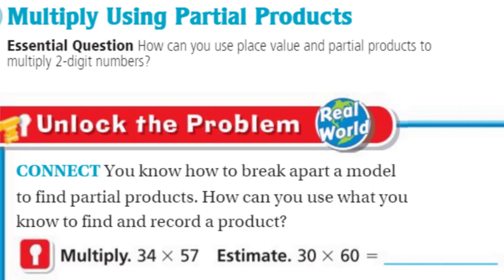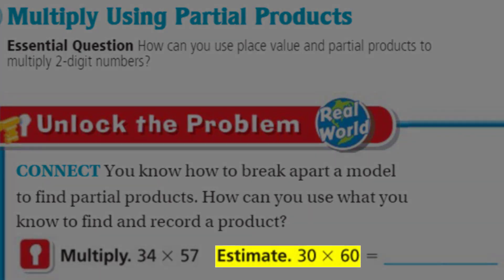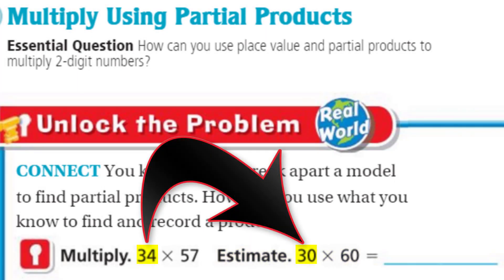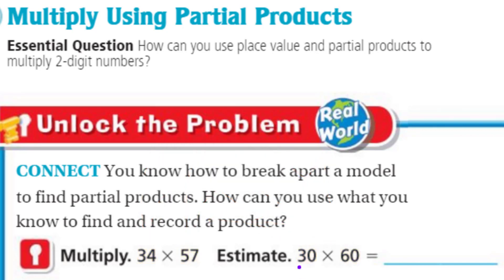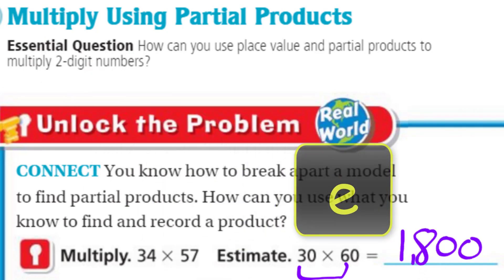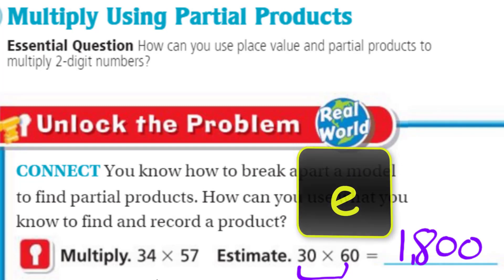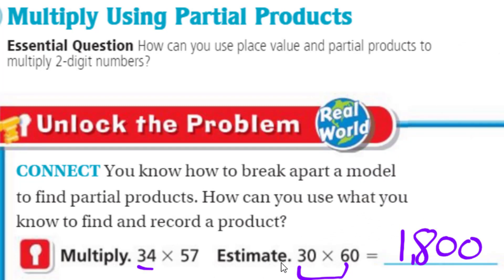First thing we're going to do is estimate. We have 30 times 60 — those are reasonable estimates for those two factors, those two-digit numbers. We have 3 times 6, which is 18, with 2 powers of 10, giving us 1,800. So that answer should be about 1,800. We actually went low with 30, but with 57 we went up, so with a bounce between both of them we should be pretty close.